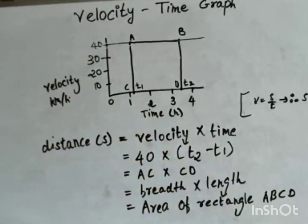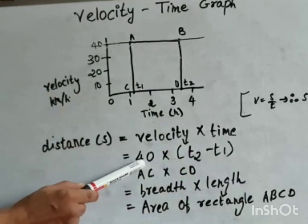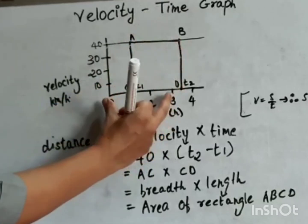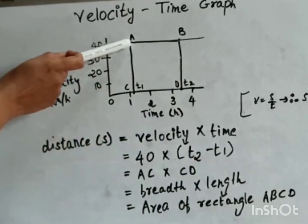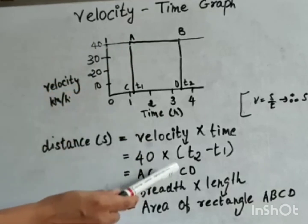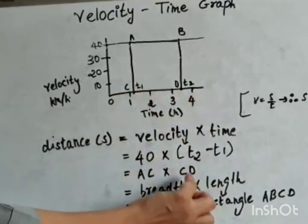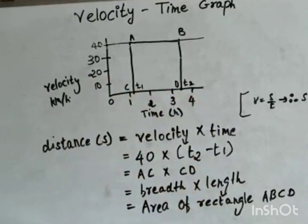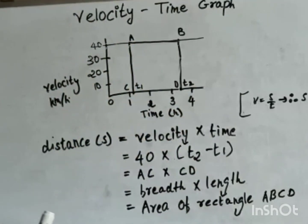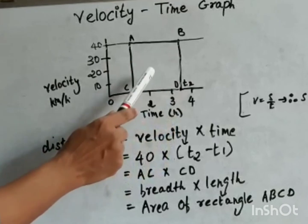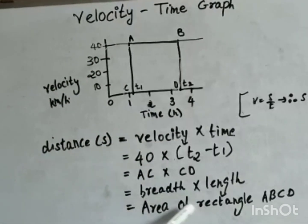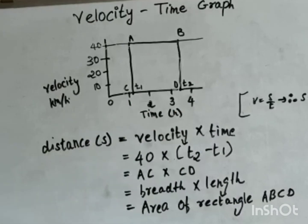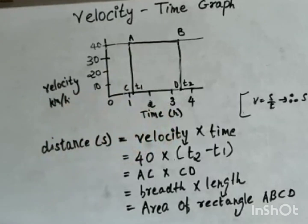The object is moving with constant velocity of 40 km/h, and time from A to B is t₂ − t₁. Velocity 40 corresponds to length AC, and t₂ − t₁ corresponds to CD. So distance = AC × CD. If we consider this as a rectangle, the distance covered equals the area of rectangle ABCD — length times breadth equals area. For any object moving with constant velocity, the distance covered equals the area under the velocity-time graph.